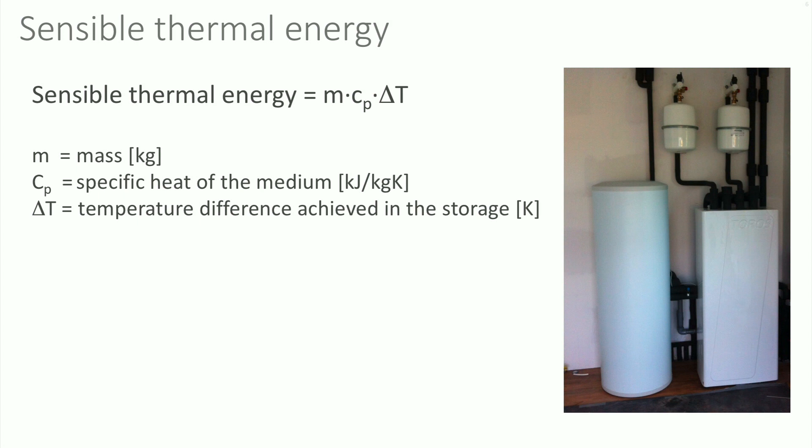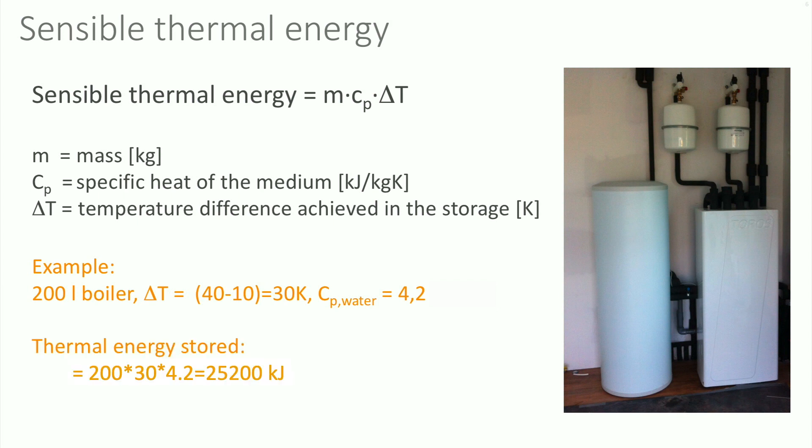The boiler has a volume of 200 liters and the temperature is raised with 30 degrees Celsius. The specific heat capacity of water is 4.2 kJ per kg·K. The thermal energy stored is thus 200 times 4.2, which equals 25,200 kJ.